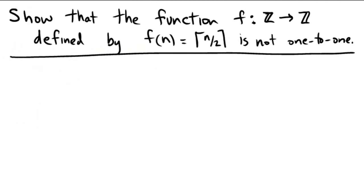For this problem we're going to show that the function f going from the integers to the integers defined by f of n equals the ceiling of n over 2 is not one-to-one. This function is not one-to-one.